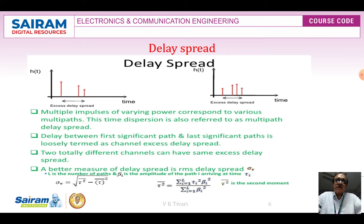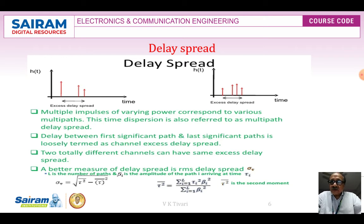The delay between the first significant path and the last significant path is loosely termed the channel excess delay spread. Two totally different channels can have the same excess delay spread, so a better measure is the RMS delay spread ρ_τ, where l is the number of paths and α_i is the amplitude of path i arriving at time τ_i. The formula gives ρ_τ as the square root of the second moment minus the mean squared, as a summation over all l paths.